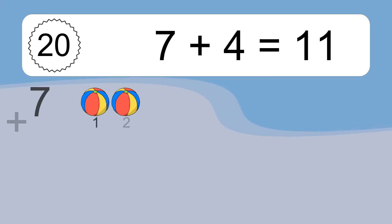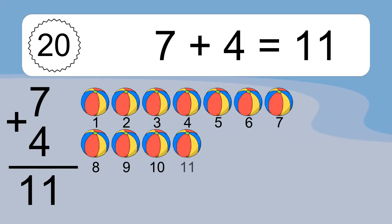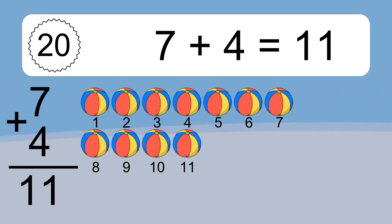7 plus 4 equals 11. Let's count it. 1, 2, 3, 4, 5, 6, 7, 8, 9, 10, 11.